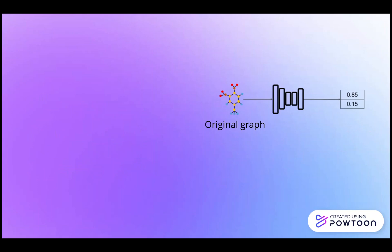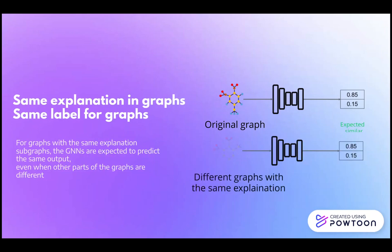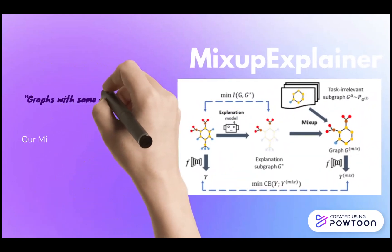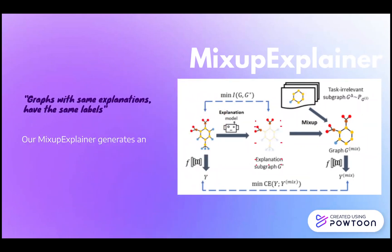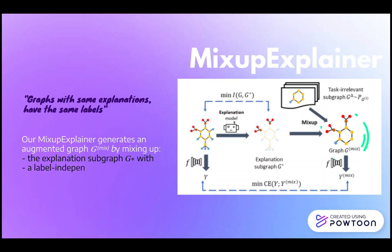To tackle this issue, we propose a novel solution. We argue that GNNs should predict the same output for graphs with the same explanation subgraphs, even when other parts of the graph are different. This forms the basis of our proposed method, MixUpExplainer. In MixUpExplainer, we combine the explanation subgraph from one molecular instance — such as NO2 — with a label-irrelevant subgraph from another instance, like a benzene ring. By merging these subgraphs, we create a new graph that emphasizes the importance of the explanation subgraph while incorporating diverse structures.